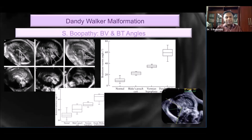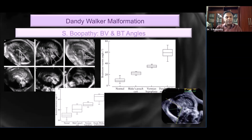Coming to the angles — when we go to the history of posterior fossa, we senior people know that posterior fossa abnormality assessment has always been subjective. We said the cerebellar hemispheres were hyperplastic and the vermis was not seen, and then diagnosed the condition. Then the mid-sagittal scan came and we saw that the vermis was actually there but rotated, so on the axial scan it was not seen.